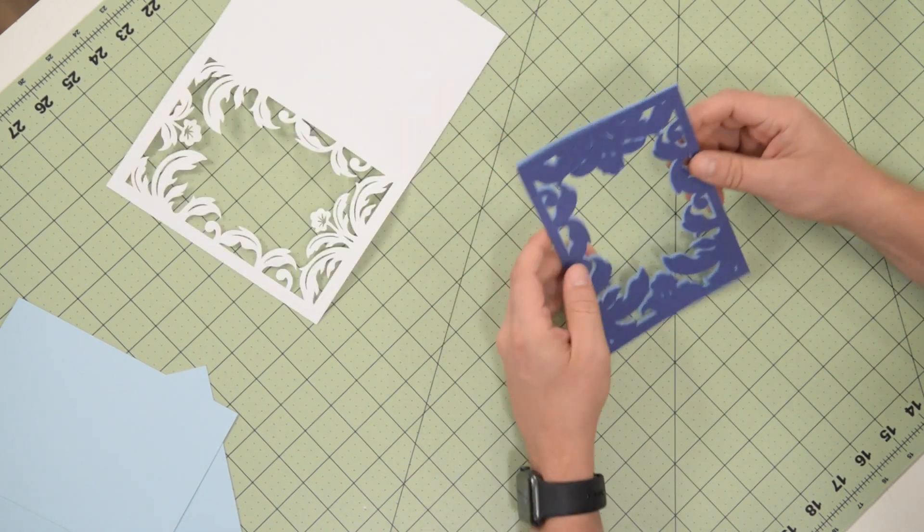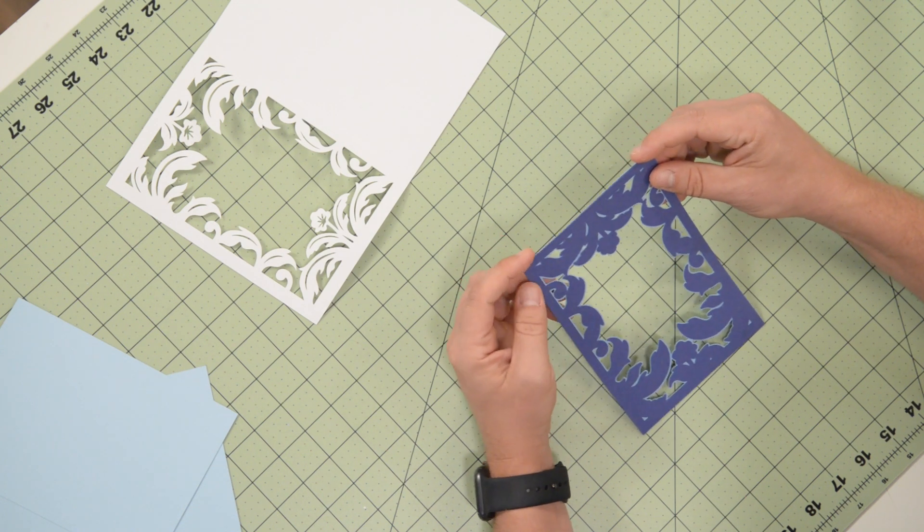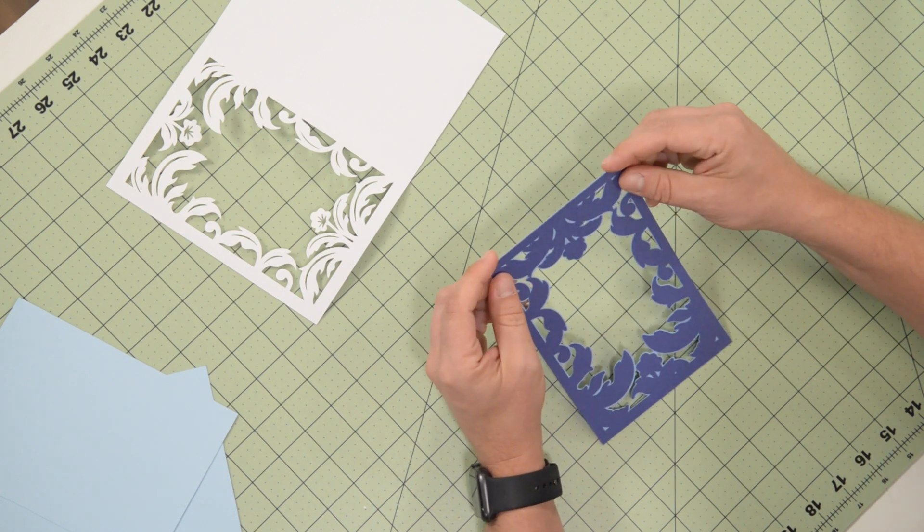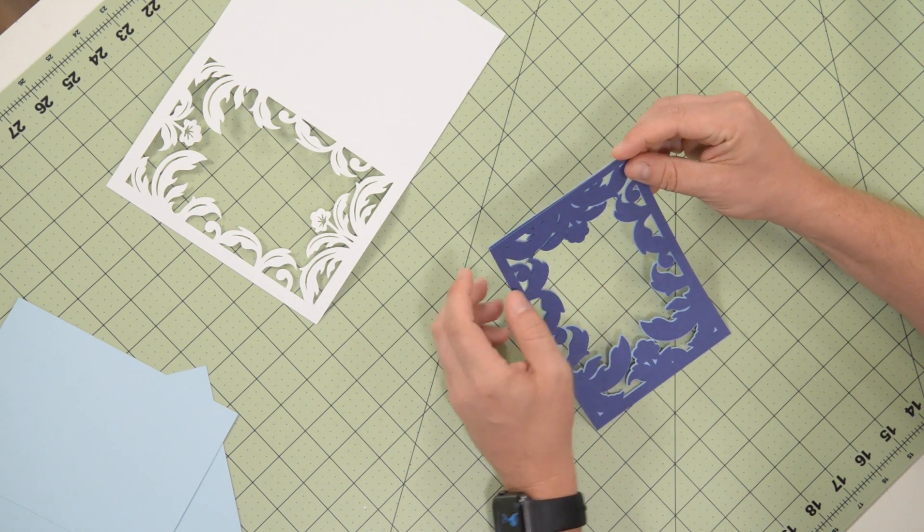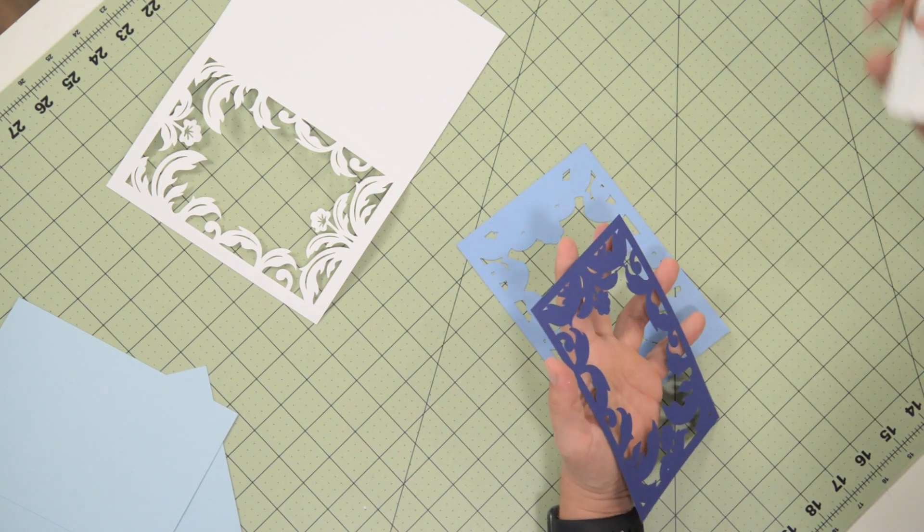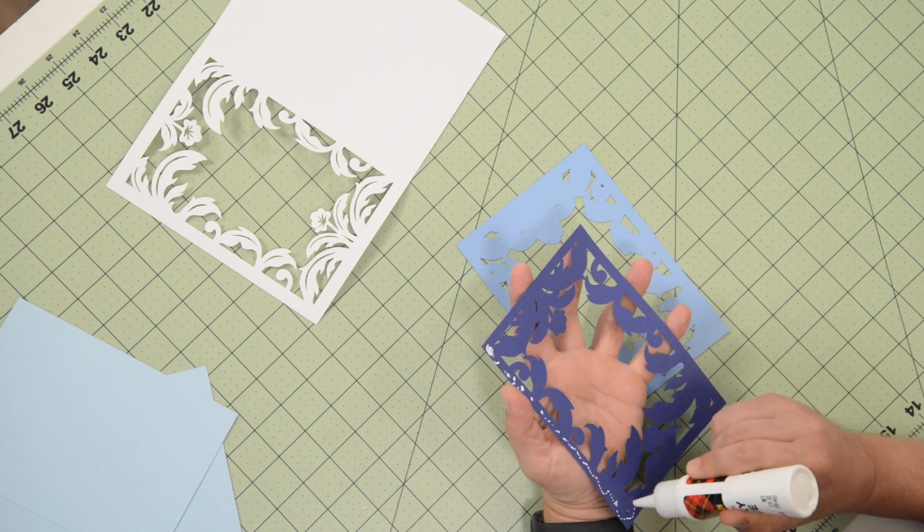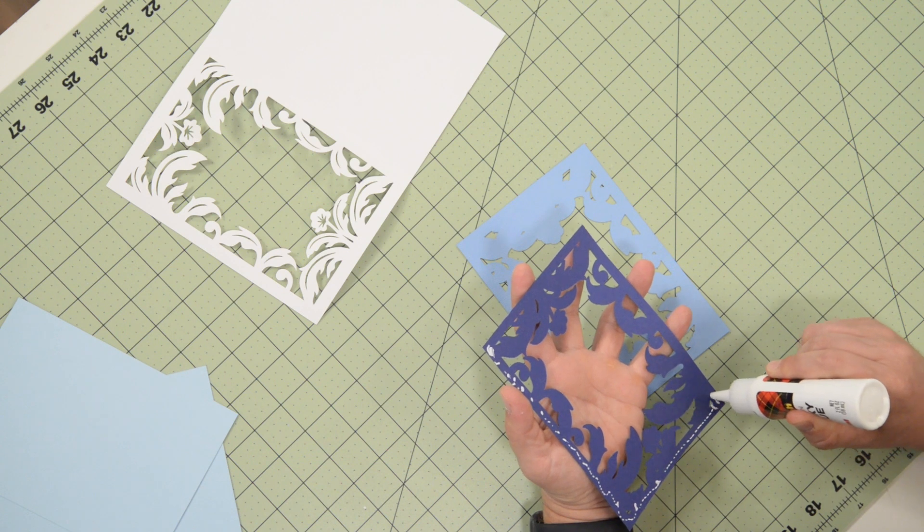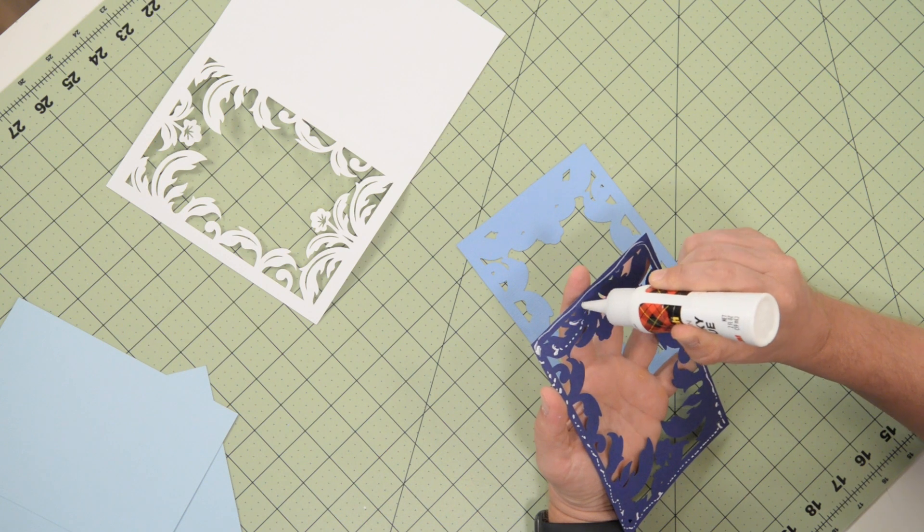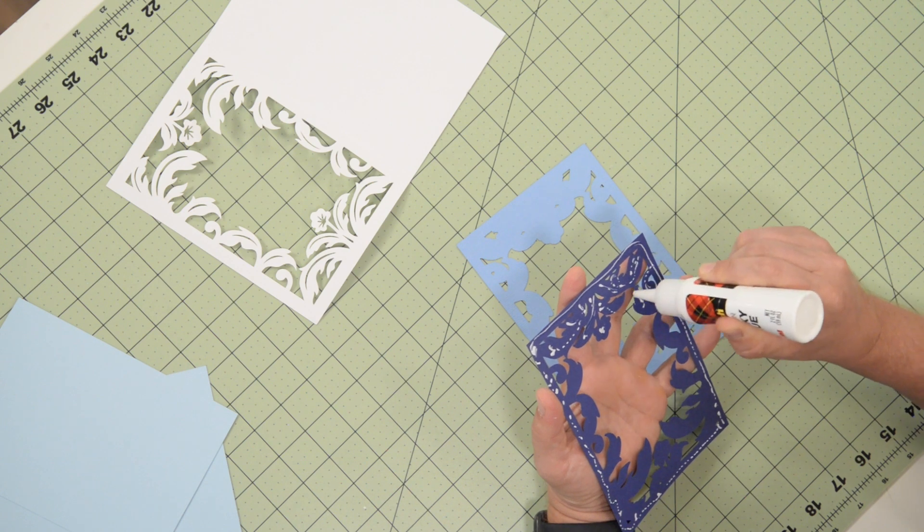We're going to start off by taking these two layers and gluing them together. You basically want to just align the two layers together and make sure everything looks nice and centered so that just a little bit of that light blue is showing through behind the darker blue. These two layers are going to be pretty easy to glue together.